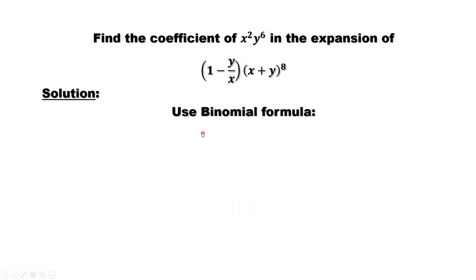First of all, we use the binomial formula to simplify the second part, (x + y)⁸. This is the formula. Here, we are not interested in every term inside this formula. We are only interested in those terms related to our calculation about the coefficient of x²y⁶.